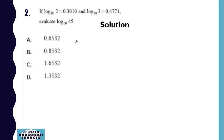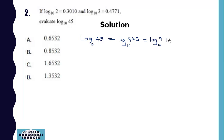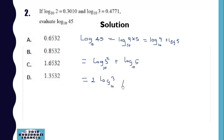Now we express log 45 in terms of log 2 and log 3. So log 45 is log 9 times 5, which is the same as log 9 base 10 plus log 5 base 10. This is equal to log base 10 of 3 squared plus log 5, which is the same as 2 log 3 plus log 5.